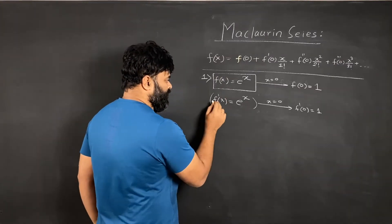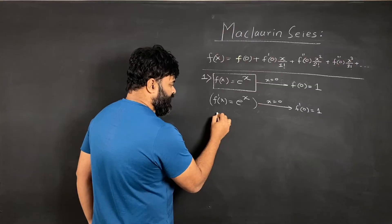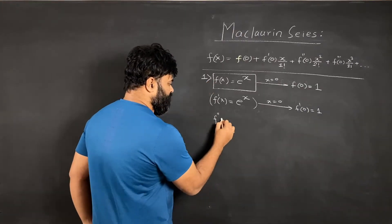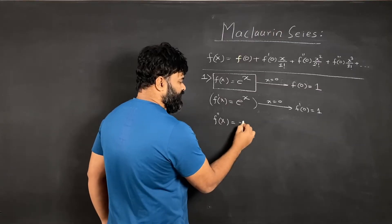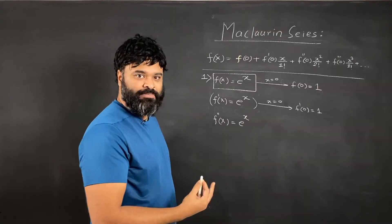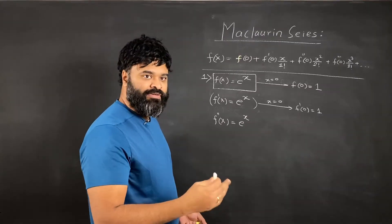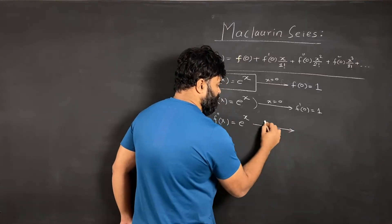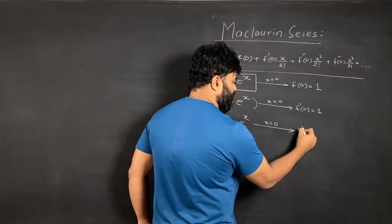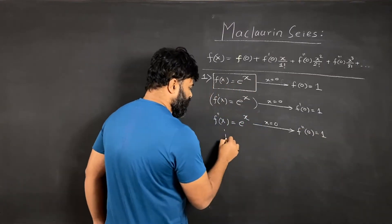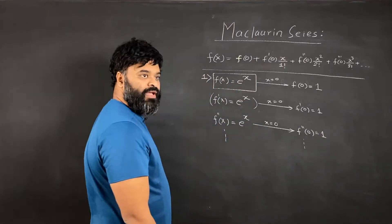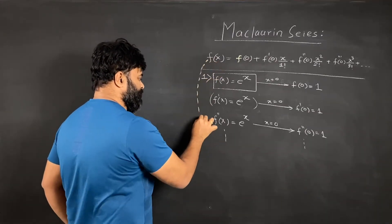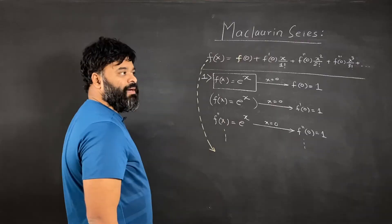You can keep differentiating. The second derivative f double dash of x — the derivative of e raised to x is still e raised to x. It's a simple example. Putting x equal to 0, f double dash of 0 is also 1, and you can keep on doing this. I'll now use the Maclaurin series expression to find the power series.